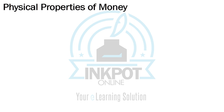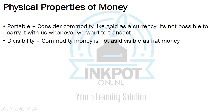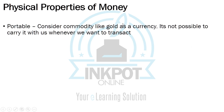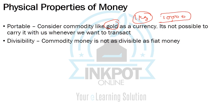Now we talk about the physical properties of money. The first is portability. Consider gold as a currency — you might say you can carry gold, but you can't carry 1 kg of gold wherever you go; it's too inconvenient. However, you can carry 10,000 rupees in currency notes in your pocket quite easily. Even for very large amounts like lakhs or crores, you can still carry physical cash — it is portable. The same is not the case with gold.